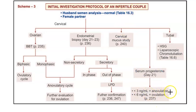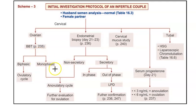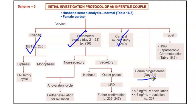If it is less than three it is anovulatory. So these are the basic checks: basal body temperature, endometrial biopsy, cervical mucus study, serum progesterone, LH, and urinary LH - all that you can check to determine whether she's ovulating.